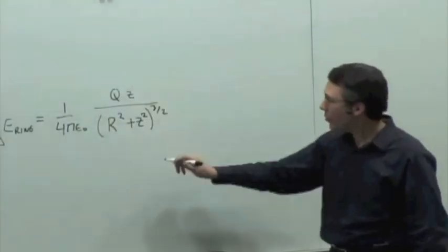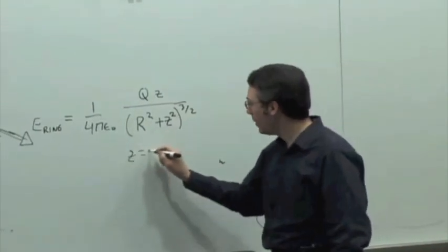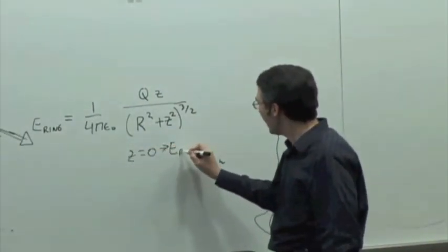And in fact, the result does give you that. If you plug in z equals zero, then the electric field is, in fact, equal to zero.